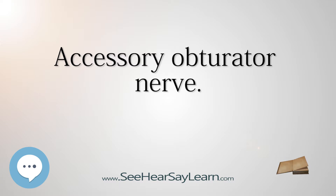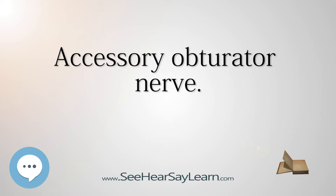One of these branches supplies the pectineus, penetrating its deep surface. Another is distributed to the hip joint, while a third communicates with the anterior branch of the obturator nerve.